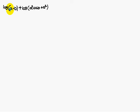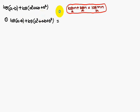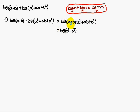Now we discuss how to solve this problem: log(a minus b) plus log(a squared plus ab plus b squared). Apply the formula log M base a plus log N base a equals log MN base a. Therefore this becomes log of (a minus b)(a squared plus ab plus b squared), which equals log(a cubed minus b cubed).